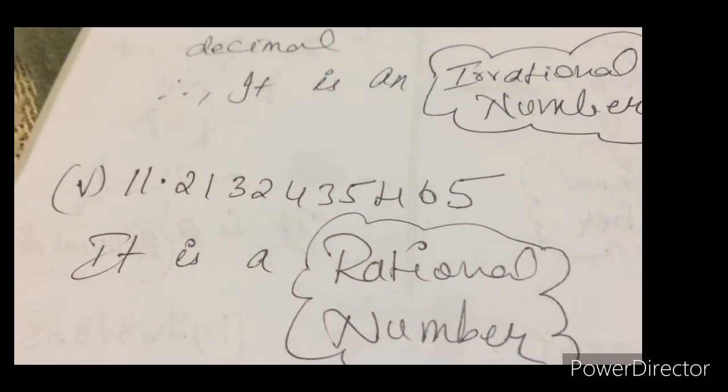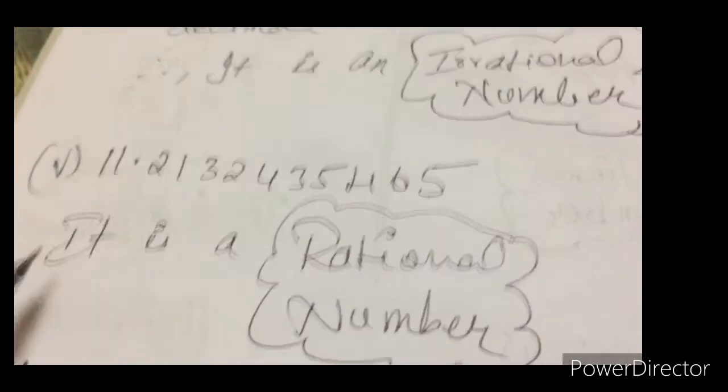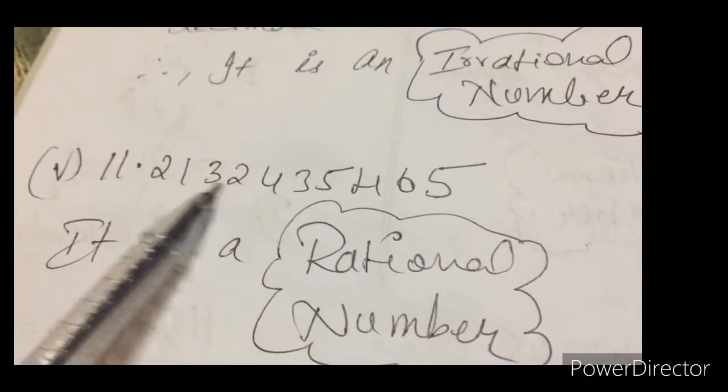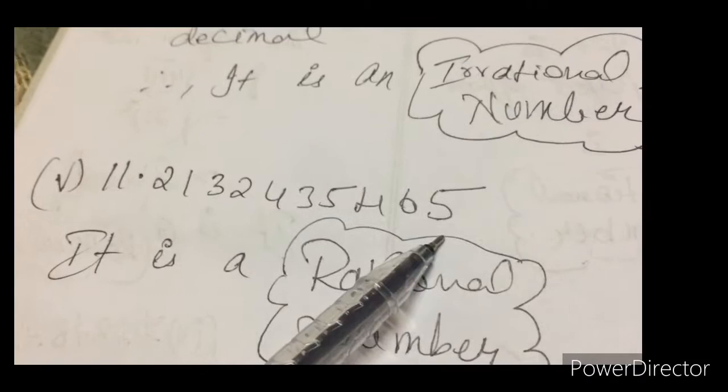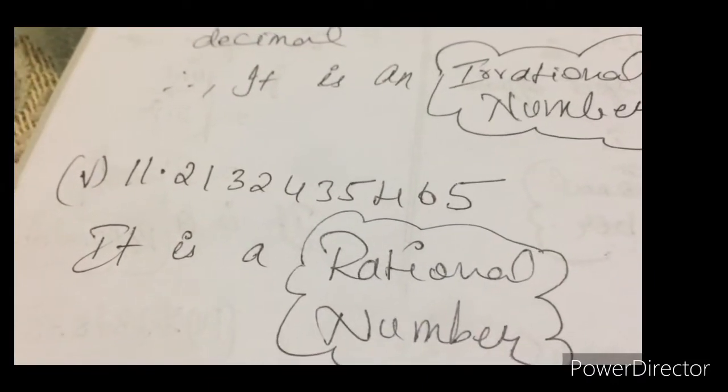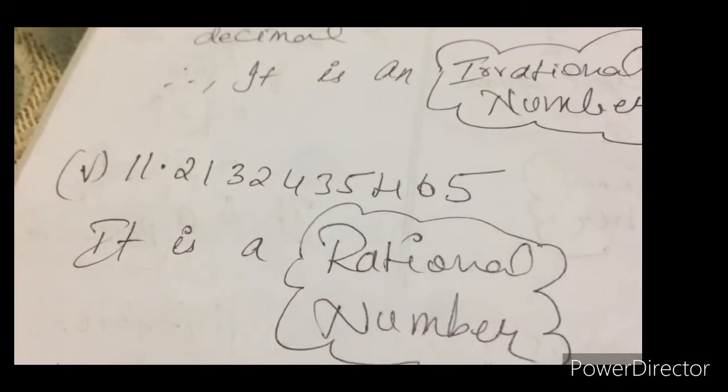See the last bit of this one, fifth one, 11.2132435465. Here the number ends. There is no so on. So what we say?